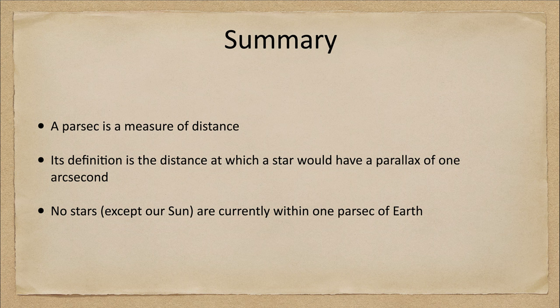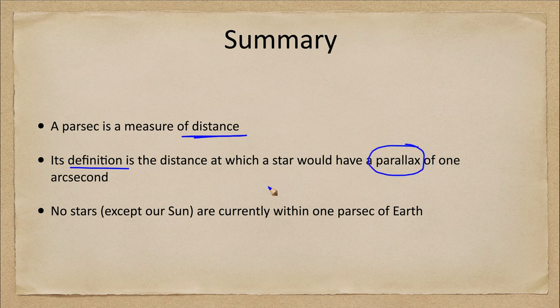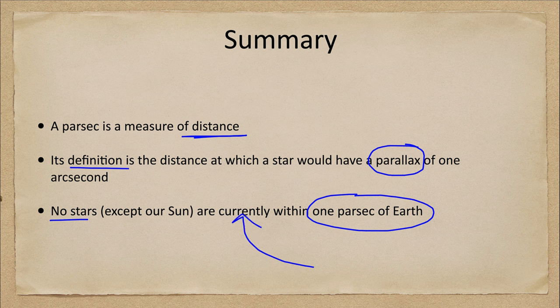To summarize: a parsec is a measure of distance — how far away something is. Its definition is the distance at which a star would have a parallax of one arc second. We know that no stars except our Sun are currently within one parsec of Earth. Note the word 'currently' — stars do move, and millions of years from now it is quite possible we will have stars within one parsec. It is simply that right now we do not, but stars have been and will be at that distance as they move relative to each other.